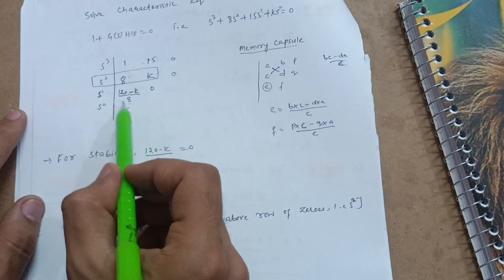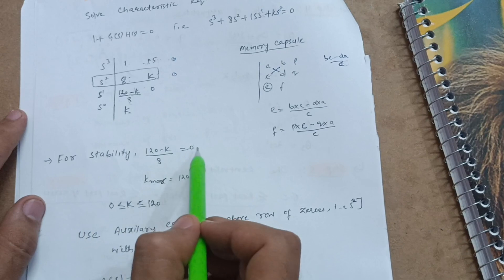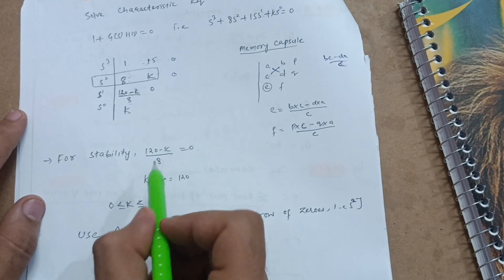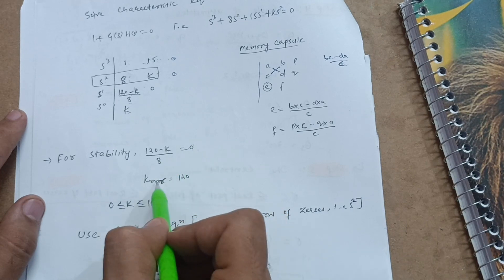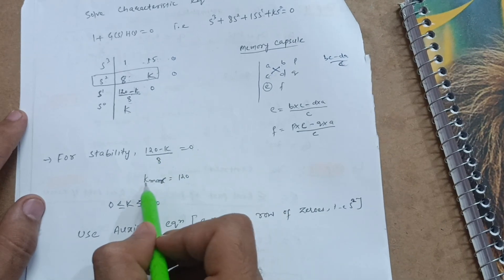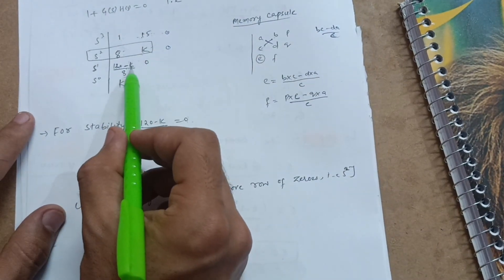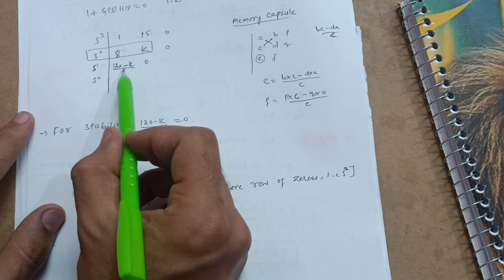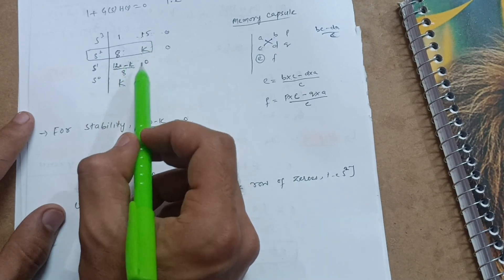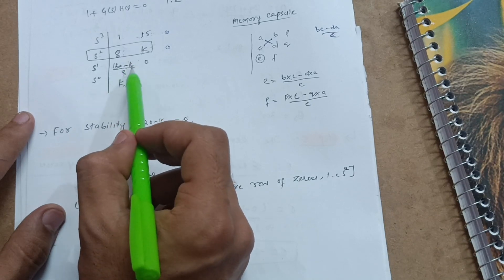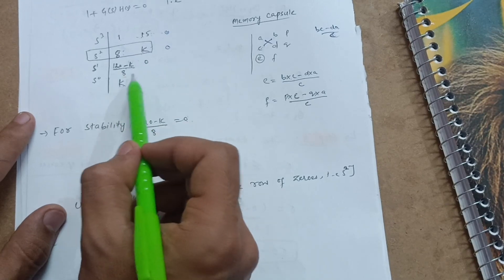For stability using Routh's array, equate the s¹ term to zero: (120 − k) / 8 = 0. So 120 − k = 0, which gives k = 120. This is called k marginal — k_marginal = 120. If you put k = 120 you get 0; if you put k = 121 you get a negative value. A sign change in Routh's array means the system becomes unstable.